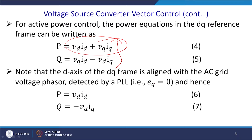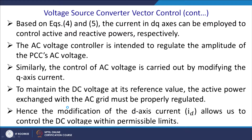If you are feeding at unity power factor — which is sometimes preferred — then EQ equals zero, and therefore Vq equals zero. Based on this unity power factor assumption, the D-axis and Q-axis currents can each be employed to independently control the active and reactive power respectively. So the current alone is sufficient to control both quantities.